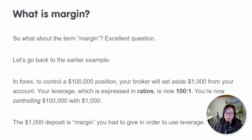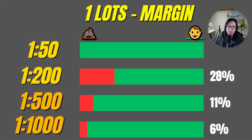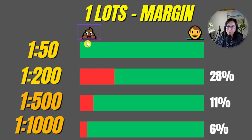To understand leverage, we also need to understand margin. I've converted the diagram of the four terminals into a simpler diagram. On the left-hand side we've got the broker, represented by a poop sign, and on the right we've got us in green. When we place a trade, the broker needs to take some money and put it aside — and we get this money back at the end of the trade when we close it.